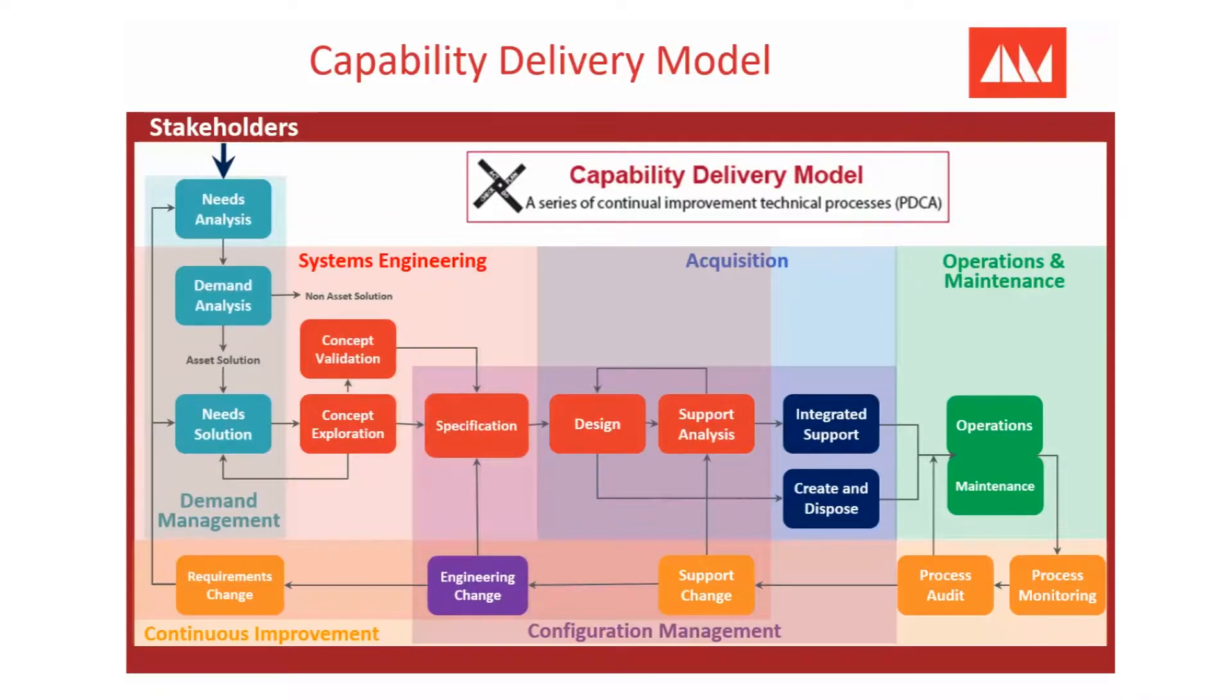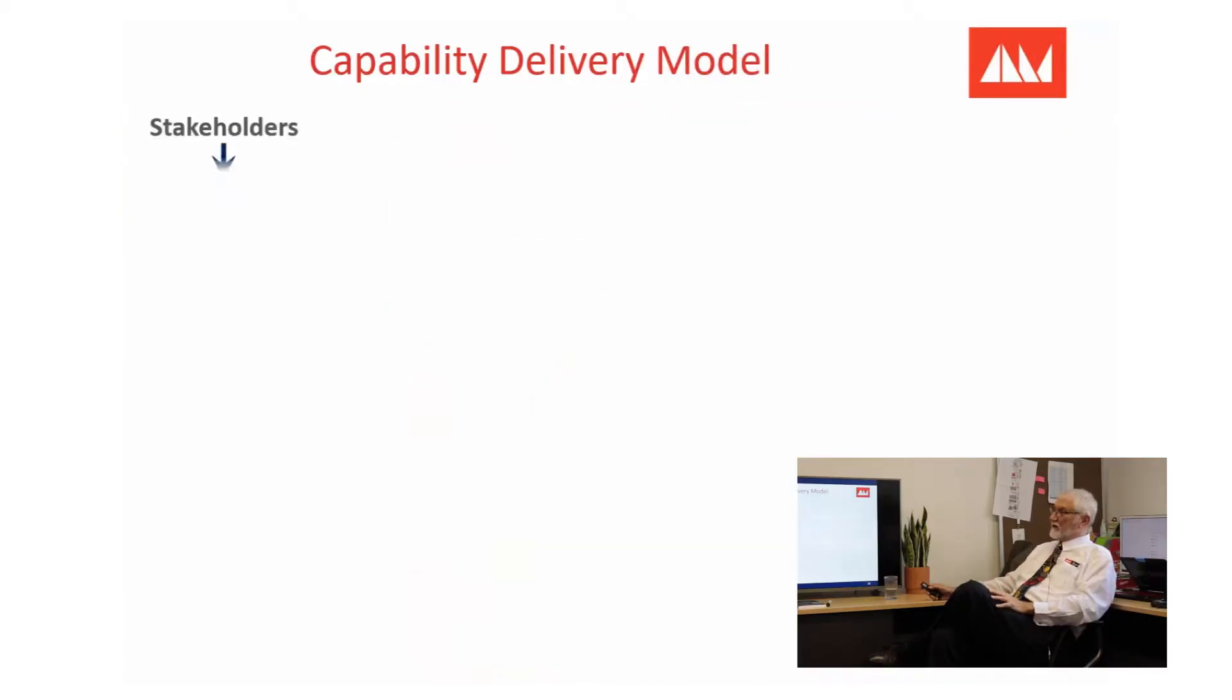called capability delivery is because it's all about processes aimed at delivering something—a capability. It's a generic model about any capability you want. That's why it's called Capability Delivery Model. Very quickly, stakeholders—there needs to be, nearly always, an agreement with them.